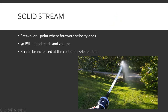Solid streams come from smoothbore nozzles. Breakover is the point where forward velocity ends and the stream just kind of stops moving forward and breaks apart, raining back down. You can see it comes out pretty solid and then right about there it really breaks apart and starts falling back down. That top of the arc is the breakover point — where it stops going forward and more or less just comes straight back down.